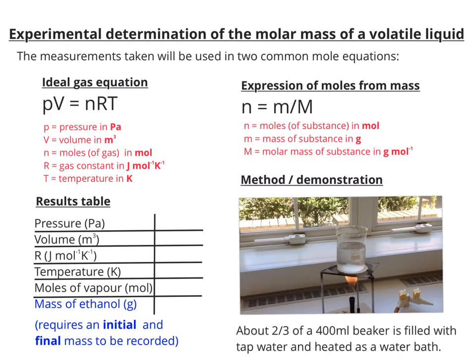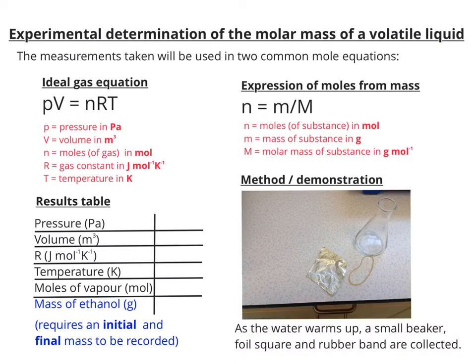About two-thirds full of a 400ml beaker is filled with tap water and heated as a water bath. So as that water warms up, you can collect a small beaker, a square of aluminum foil, and a rubber band.